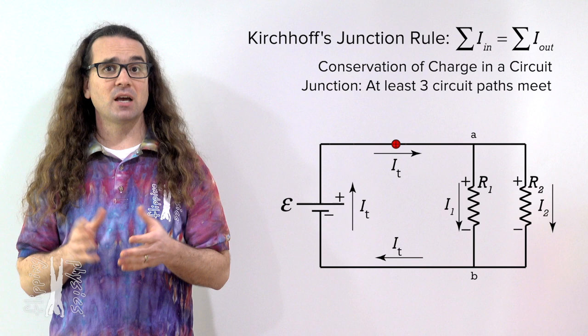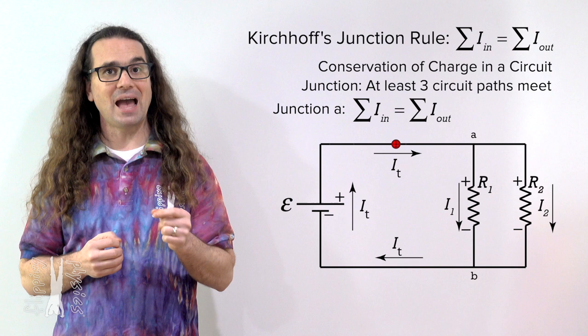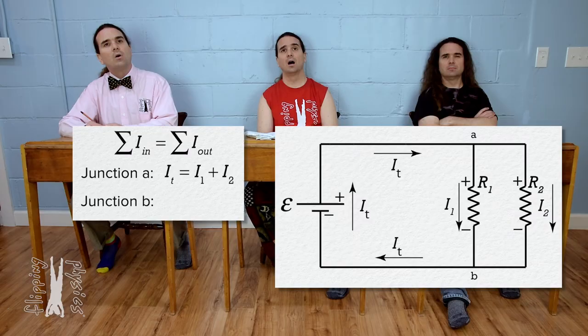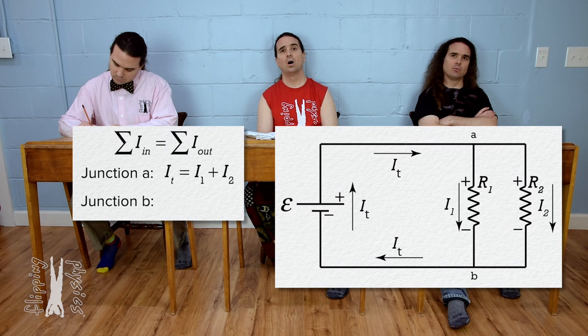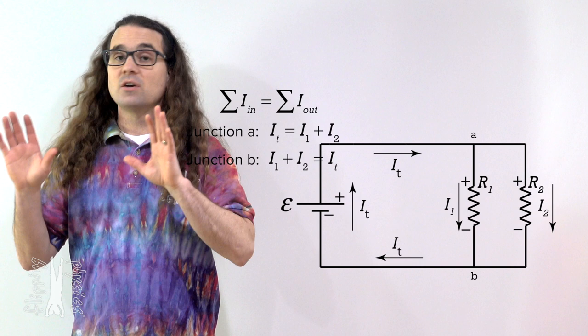Kirchhoff's junction rule equations for this circuit: for junction A, the current going into junction A equals the currents coming out of junction A, meaning the terminal current equals current one plus current two. For junction B, currents into junction B equals currents out of junction B, so current one plus current two equals terminal current. Those two junction equations end up being the same.